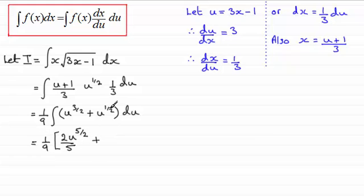And then for the next term, add 1 to the power, that becomes u to the power 3 over 2. Divide by 3 over 2, same as multiplying by 2 thirds. Close that bracket off, and don't forget the constant of integration plus c.